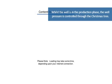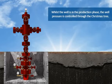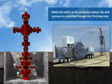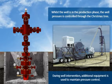Whilst the well is in the production phase, the well pressure is controlled through the Christmas tree unless there are well intervention operations taking place. During well intervention, for example when using slick line or coil tubing, additional equipment is used to maintain pressure control.